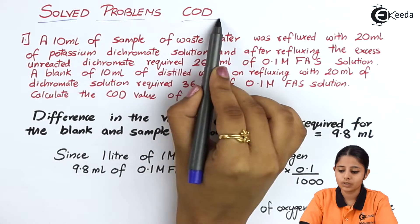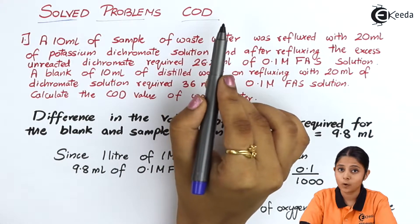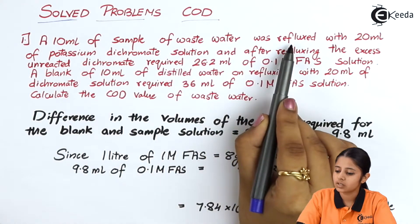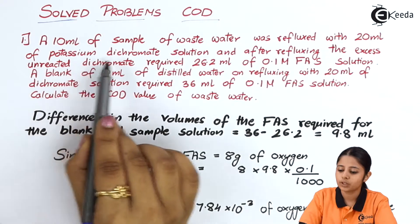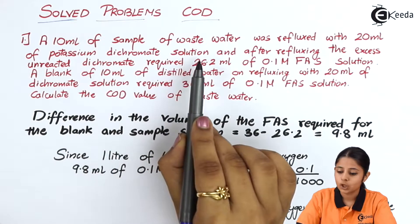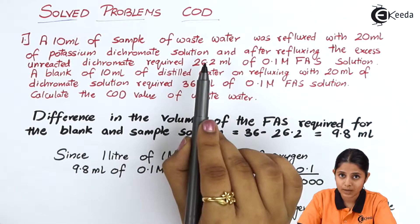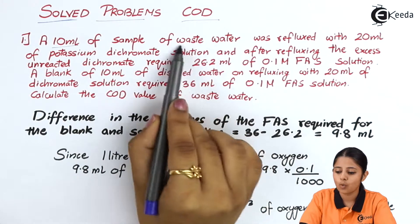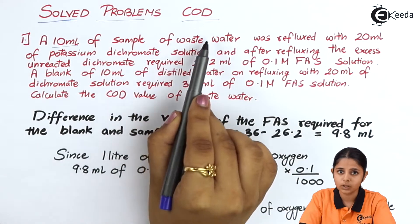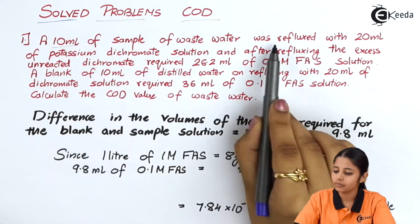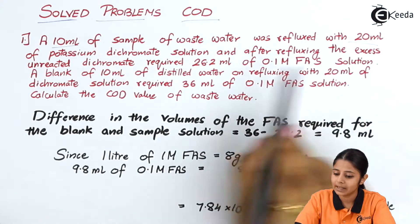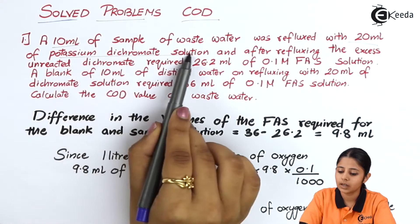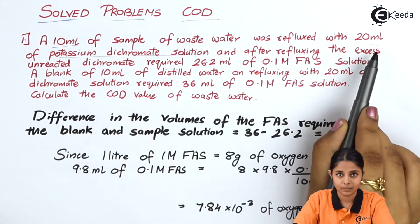We will solve problems on COD — chemical oxygen demand. A 10 ml sample of waste water was refluxed with 20 ml of potassium dichromate solution. So we have two values: 10 ml of the waste water sample (the impure water), and 20 ml of the potassium dichromate solution.